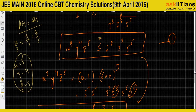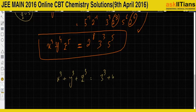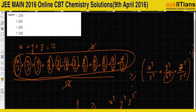Therefore x³ + y³ + z³ = 3³ + 4³ + 5³ = 27 + 64 + 125 = 216. The answer is option 2. This question was based on the AM-GM inequality.